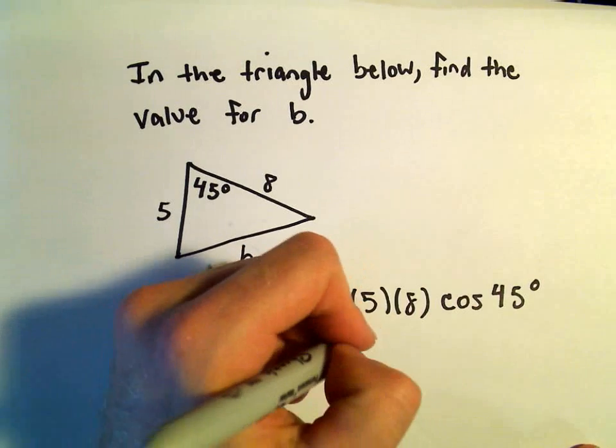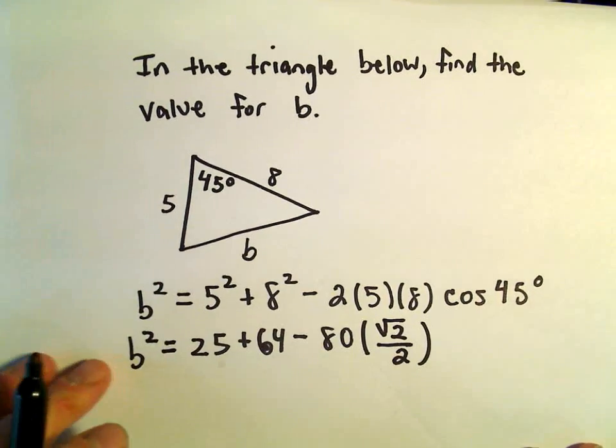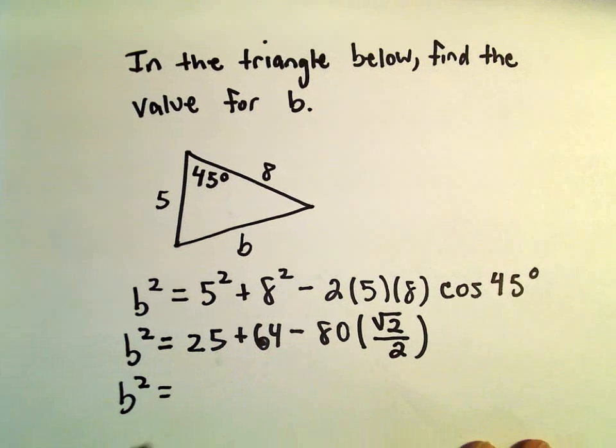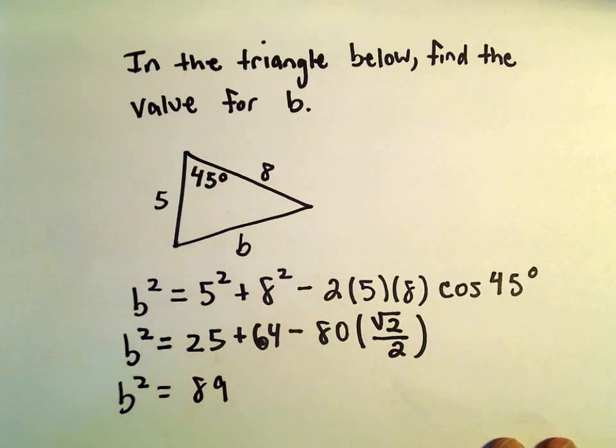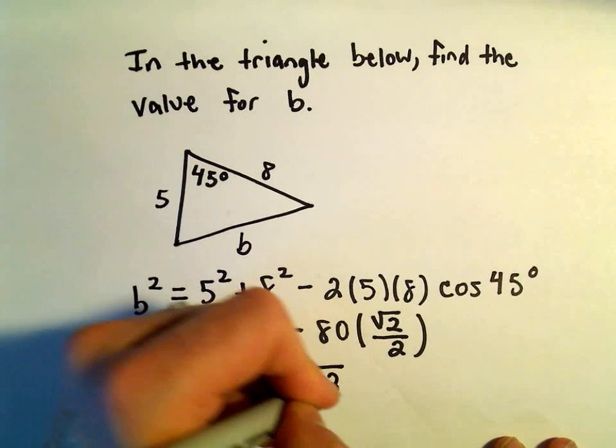Cosine of 45 degrees, we know that that is square root of 2 over 2. 25 and 64, that's going to give us 89. 80 divided by 2 would be 40, so we would have negative 40 times the square root of 2.